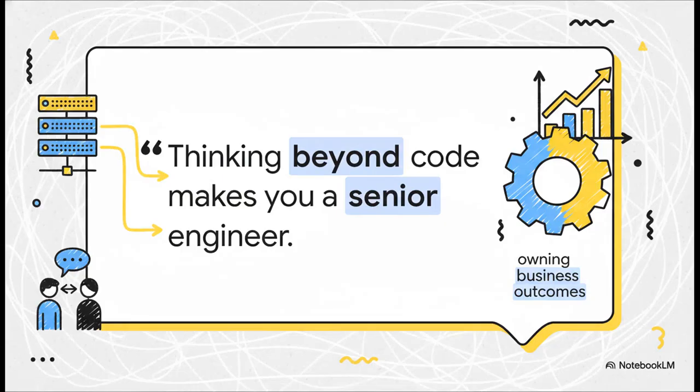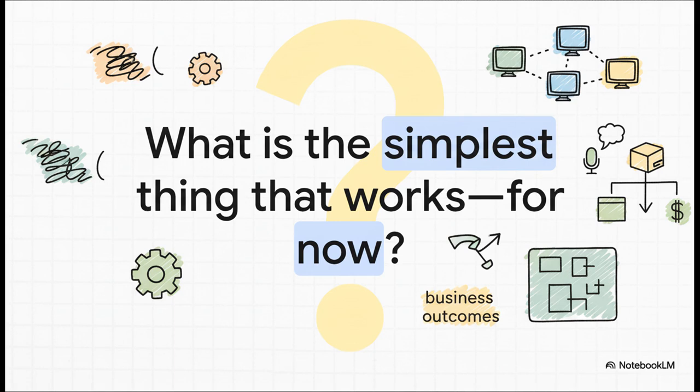So if you only remember one thing from all of this, let it be this. Writing code makes you a programmer. That's the entry ticket. But thinking beyond the code, thinking about the systems, the communication, and the business outcomes, that's what makes you a senior engineer. So I want to leave you with a question to ask yourself on your very next project. Instead of chasing the most perfect, elegant, super scalable solution that's going to last for the next decade, just start by asking this. What is the absolute simplest thing that could possibly work just for now? Answering that question honestly, well, it can change everything.